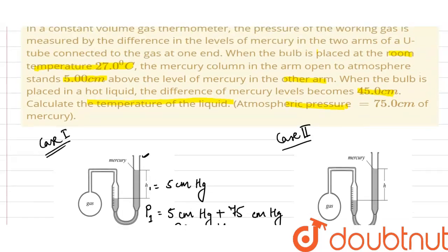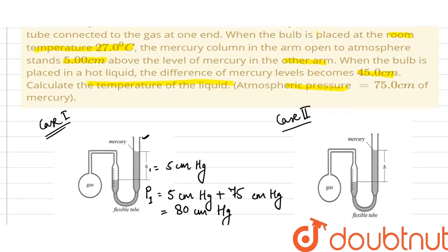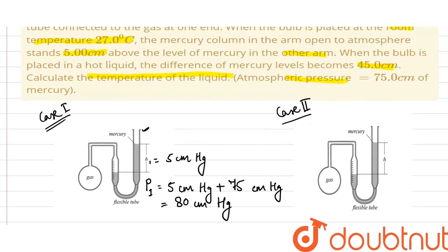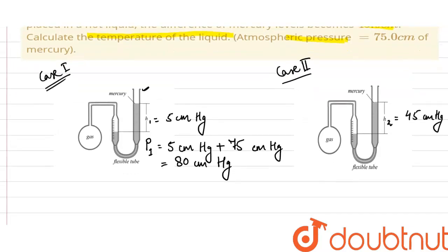In the second case, when the bulb is placed in a hot liquid, the rise in mercury level h2 is equal to 45 centimeters. So the total pressure P2 is equal to 45 centimeters of mercury plus atmospheric pressure, which is 75 centimeters of mercury. This comes out to be 120 centimeters of mercury.